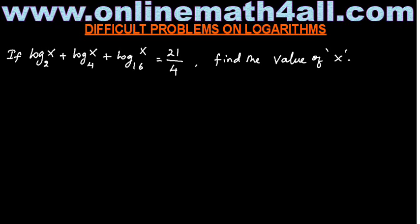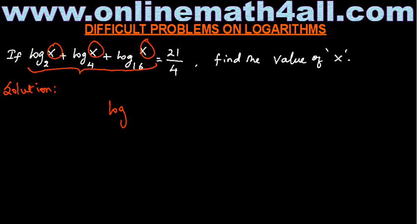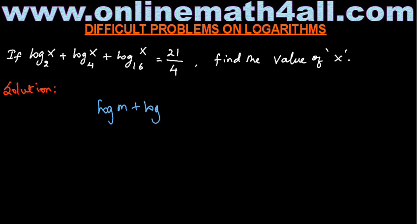When students first see this problem, they will immediately try to apply the fundamental law on the left side of the equation, because we have three logarithms being added. Whenever two or more logarithms are added, we can take only one logarithm and multiply the terms — because the fundamental law states that log M plus log N equals log of M times N.